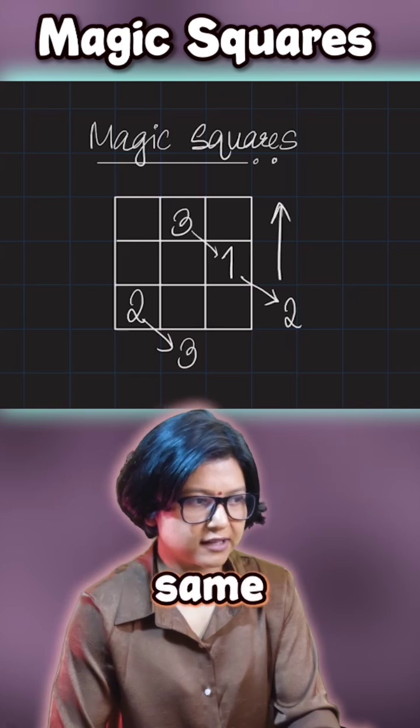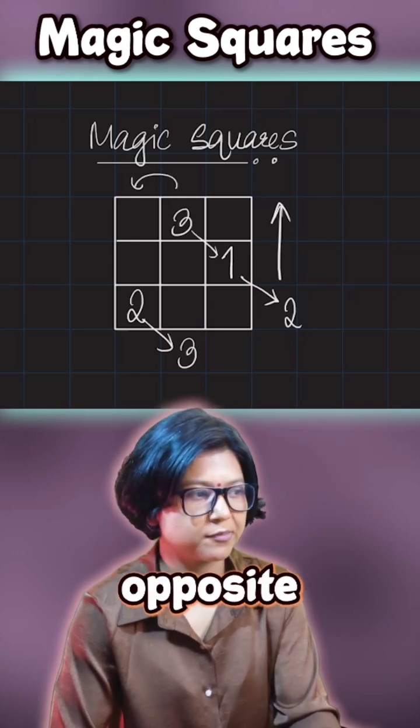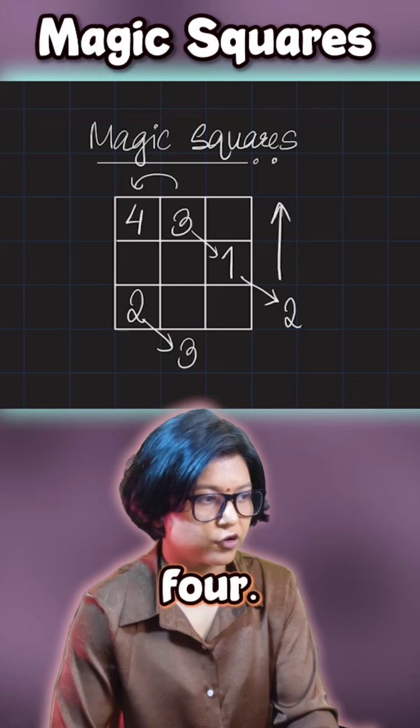Now, if I want to go in the same direction, it's already occupied, so I'll start moving in the opposite direction. That is west. So, 4.